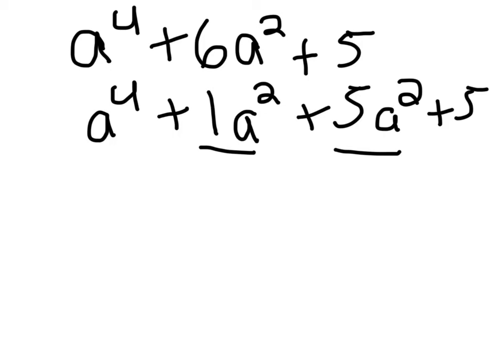So after that, we're going to group them. So you can take out an a squared from both of these. This one and this one. So we have a squared, parentheses, take what's left. So a squared plus 1.